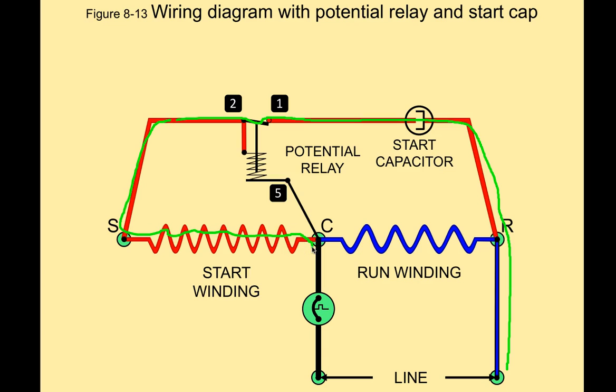There's our starting circuit: start winding, start capacitor and potential relay. What happens is when the motor starts, the compressor motor starts, there is what's called a counter or back EMF and that back EMF is what energizes the potential relay coil.